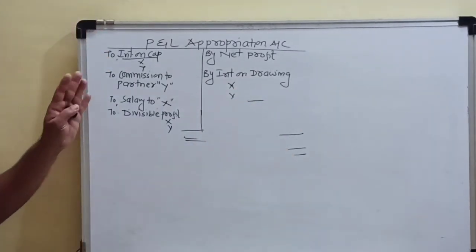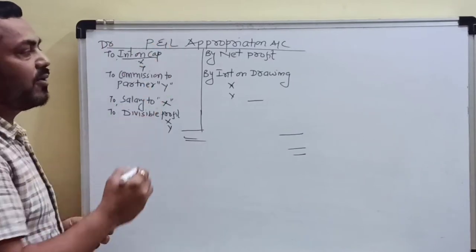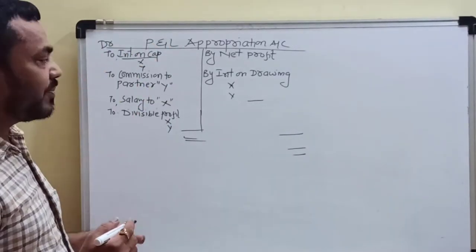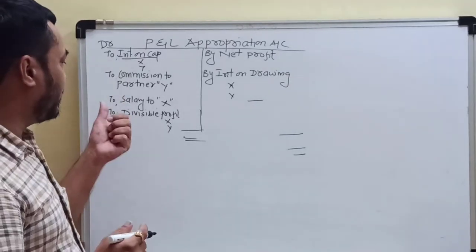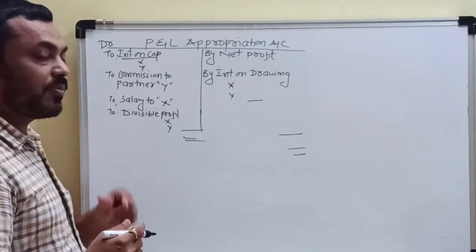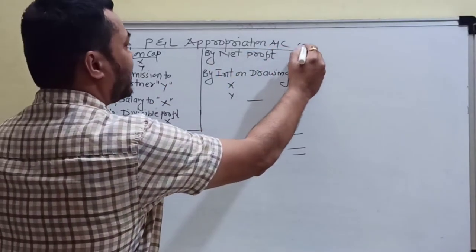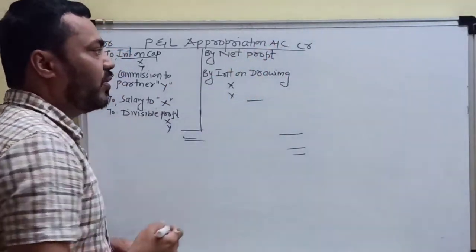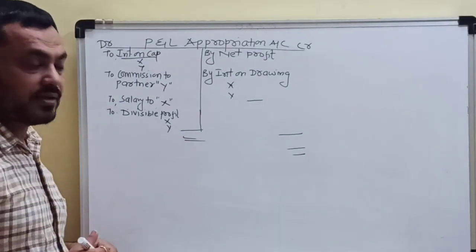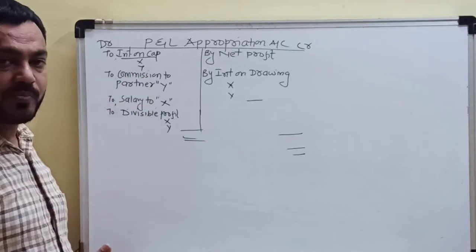On the debit side of profit and loss appropriation account, you find interest on capital, commission to partner, salary to partner, and divisible profit for X and Y. On the credit side, you will find net profit and interest on drawing. So this is how we have prepared the profit and loss appropriation account.